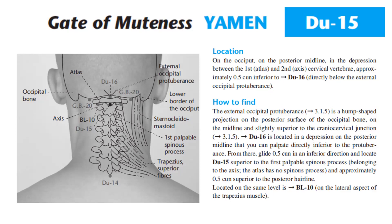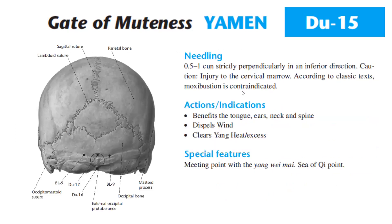Located on the same level is Bladder 10, on the lateral aspect of the trapezius muscle. Needling: Du 15 is 0.5 to 1 cun, strictly perpendicularly in an inferior direction. Caution: risk of injury to the cervical spinal cord. According to the classic texts, moxibustion is contraindicated.